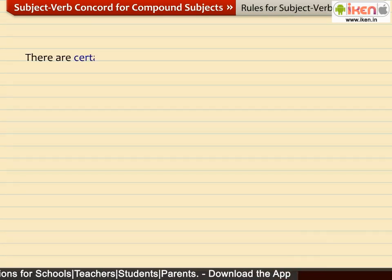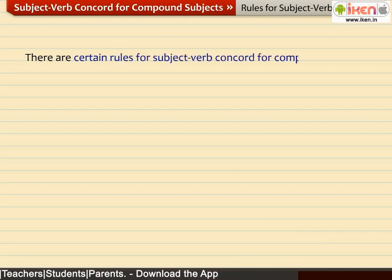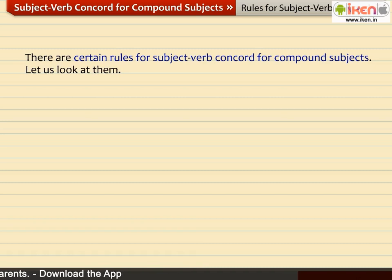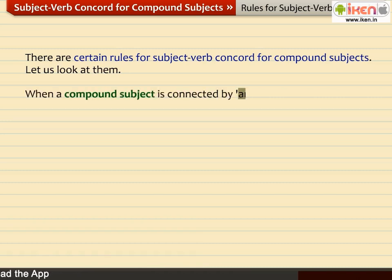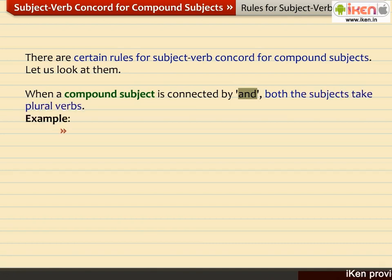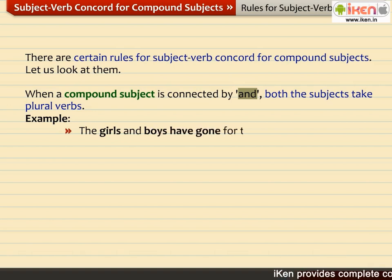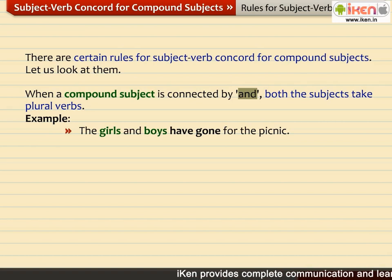There are certain rules for Subject-Verb Concord for Compound Subjects. When a compound subject is connected by AND, both the subjects take plural verbs. For example: 'The girls and boys have gone for the picnic.' The subjects 'girls' and 'boys' are connected by AND and take the plural verb 'have gone.'